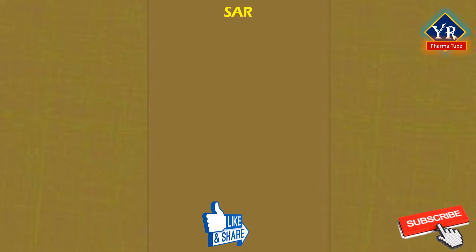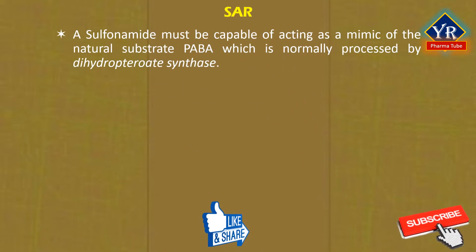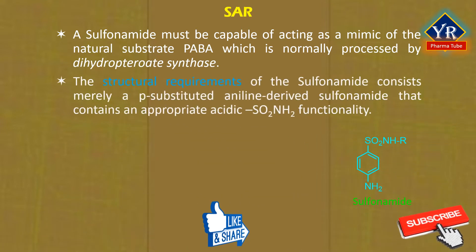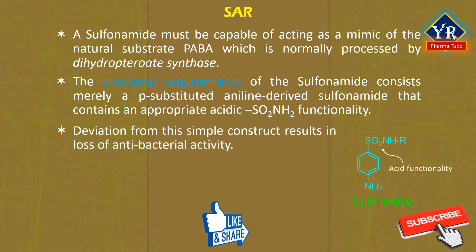In order to serve as an effective antibacterial agent, a sulfonamide agent must be capable of acting as a mimic, i.e. competitive inhibitor, of the natural substrate PABA, i.e. para-amino-benzoic acid, which is normally processed by dihydropteroate synthase enzyme. The structural requirements of the sulfonamide antibacterial agents consist merely a para-substituted aniline-derived sulfonamide that contains an appropriate acidic sulfonamide functionality. Deviation from this simple construct results in loss of antibacterial activity.